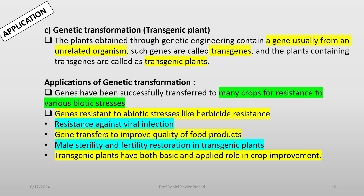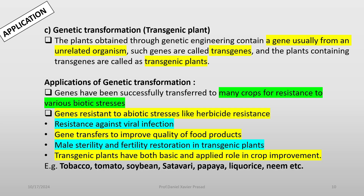Fertility restoration in transgenic plants — transgenic plants have both basic and applied roles in crop improvement. Examples include tomato, tobacco, soya bean, papaya, golden rice, neem, etc. Genetic transformation can yield phytopharmaceuticals, and the compounds produced can provide various resistance and protection to the plant.